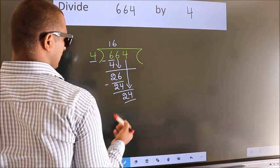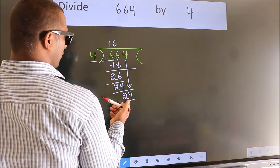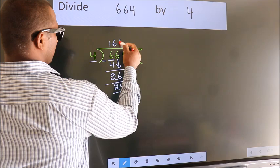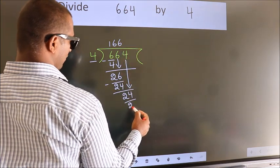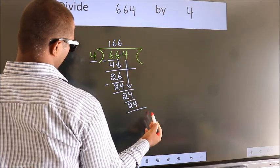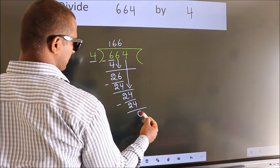So, 24. When do we get 24? In 4 table. 4, 6, 24. Now, we subtract. We get 0.